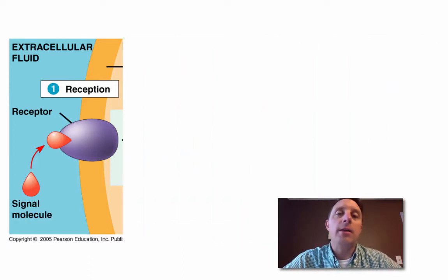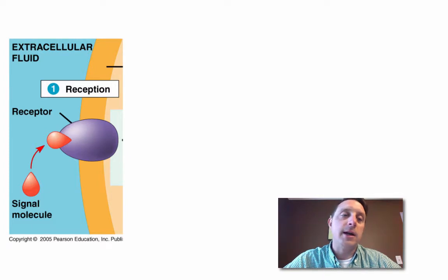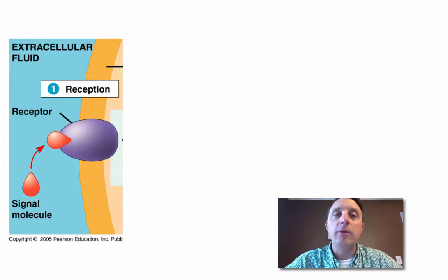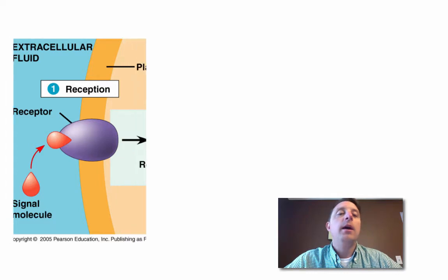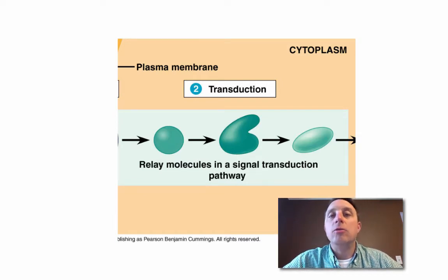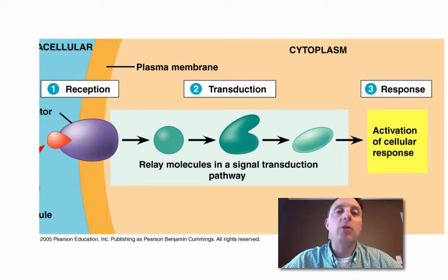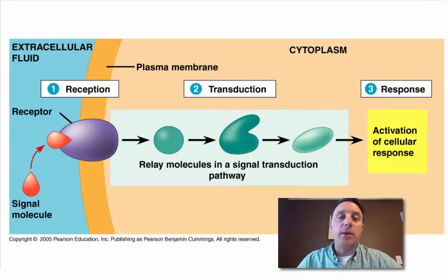Reception: the receptor is a very specific protein that will bind to the signaling molecule. The receptor is on the cell surface and the signaling molecule is on the outside of the cell, though this is not always the case — some signaling molecules are able to enter into the cell through the cell membrane. The second step is transduction, where that signal is transmitted from the receptor throughout the cell to wherever the response will take place. And the response is a very specific response to the particular signaling molecule and whatever cell type is picking up the signal.